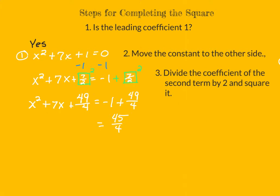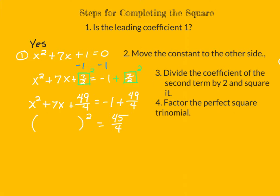Now I have to figure out what the left-hand side equals. I have a quadratic, and in fact it is a perfect square trinomial, because I forced it to be — by taking half of the second term's coefficient and squaring it, I set up a perfect square trinomial. That will factor, and that's our next step. The perfect square trinomial factors into a binomial squared: the square root of the first term, the sign of the middle term, and the square root of the last term. And I can read that square root right from the box I drew earlier.